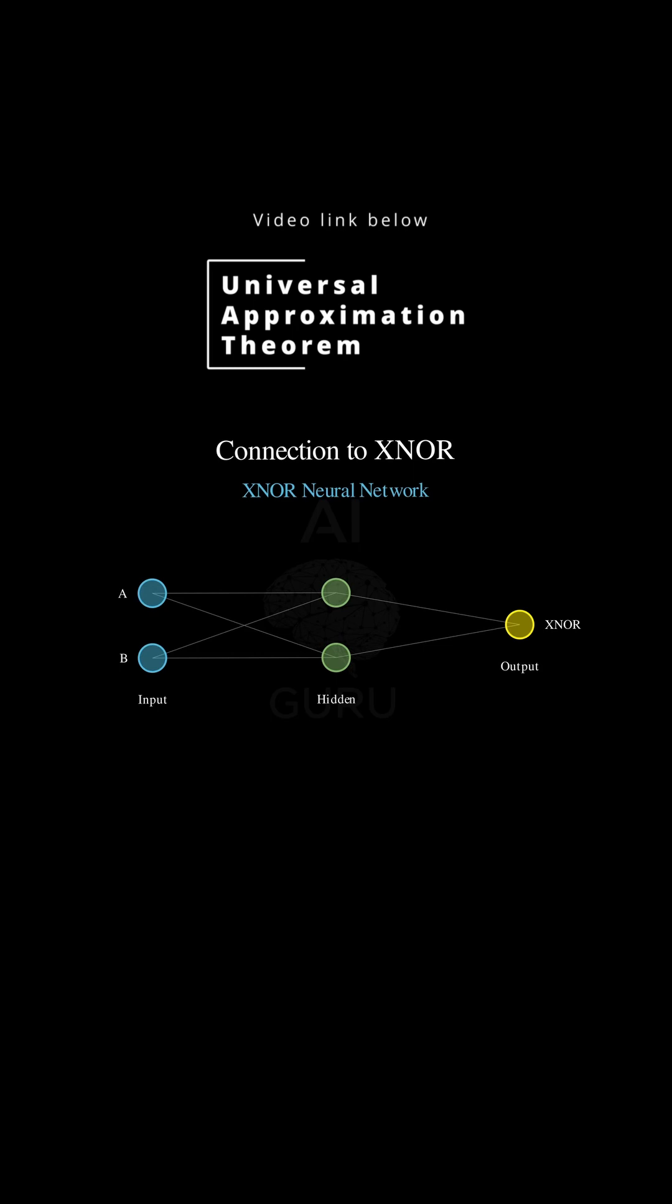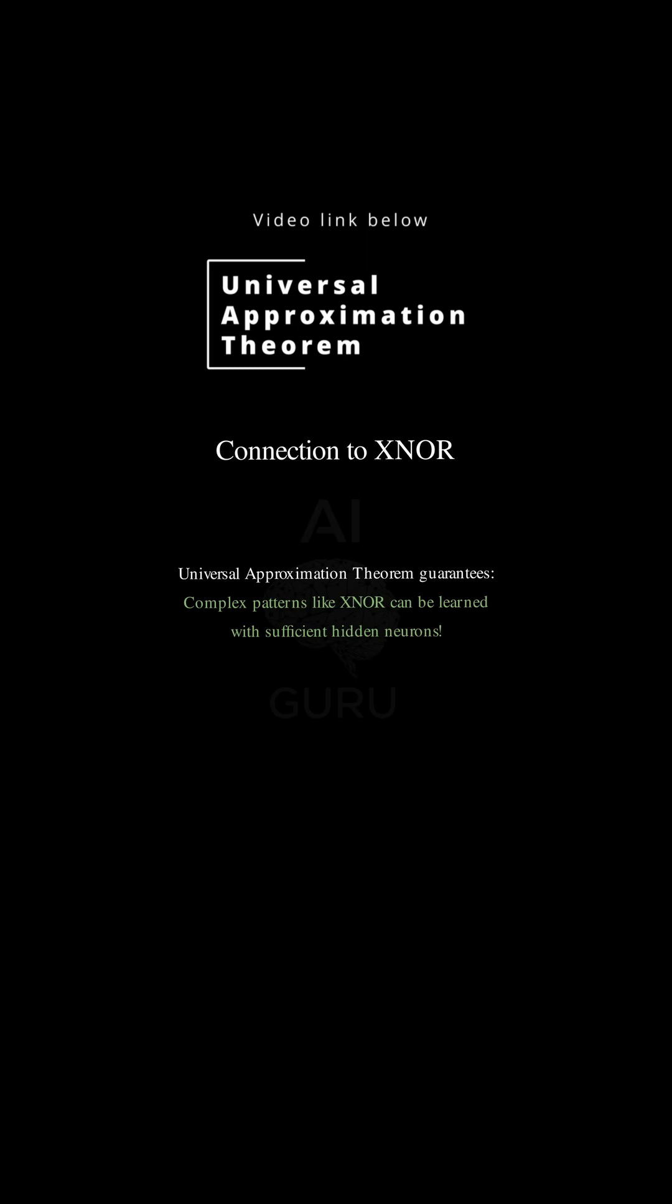In theory, yes. The big catch is given enough units. To solve a really complex problem, you might need an exponentially large number of neurons in that one layer, which would be impossible to actually train.